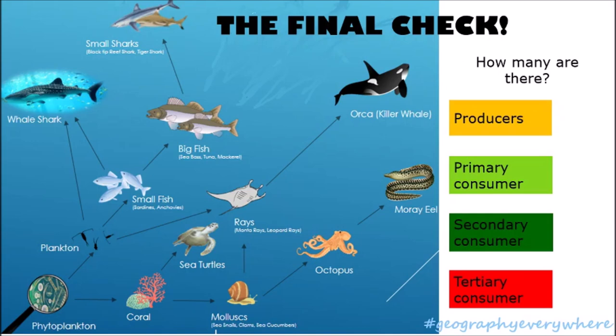The final check: the food chain shown here is an arctic habitat. Count how many producers, primary consumers, secondary consumers, and tertiary consumers there are. Pause the video and allow yourself two minutes to work them out. When you're done, press play and check your answers.